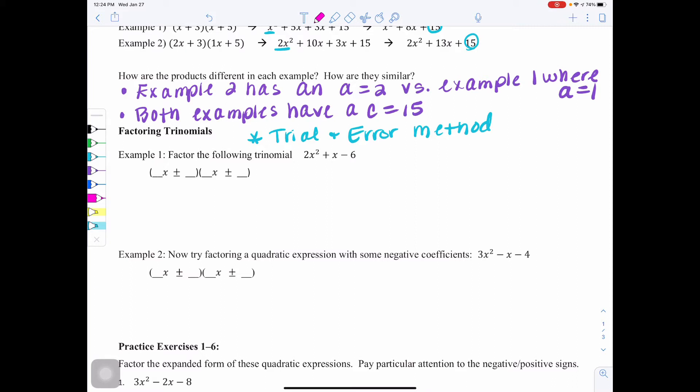Now we're still going to start the same way that we did before. We're going to take the c value, which is negative 6, and we are going to list the factors of negative 6 in pairs. So I would have negative 1 and 6, 1 and negative 6, 2 and negative 3, and then negative 2 and 3.